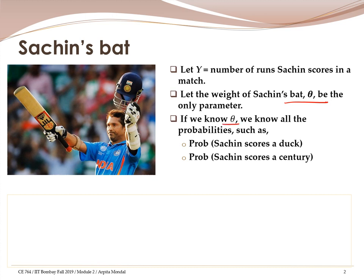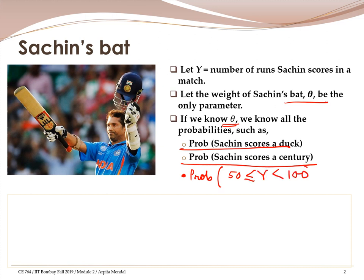If we know theta — the weight of his bat — we would know the probability of Sachin scoring a duck (we sure don't want him to do that), and we can calculate the probability of Sachin scoring anywhere between 50 and 100. So the random variable y can take a value between 50 and 100, and that probability we can determine. Basically, if we know theta, we are able to calculate all such probabilities.